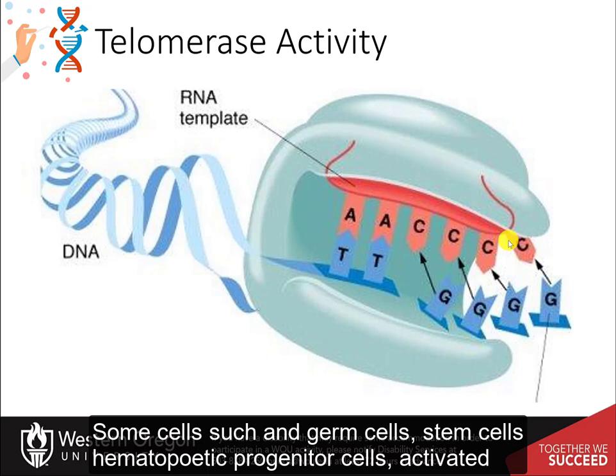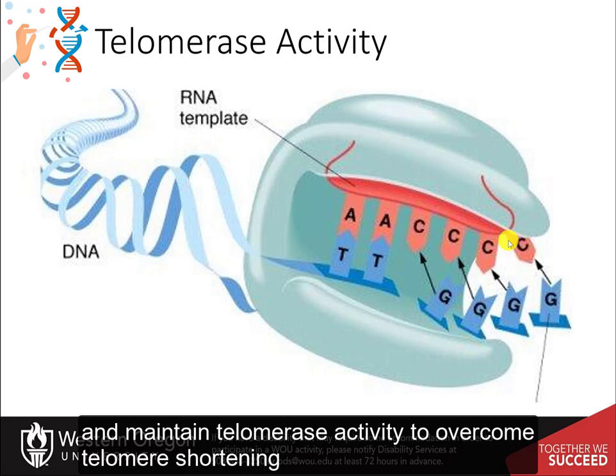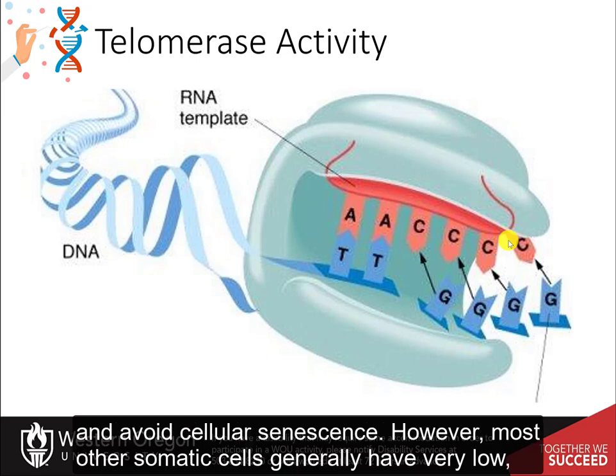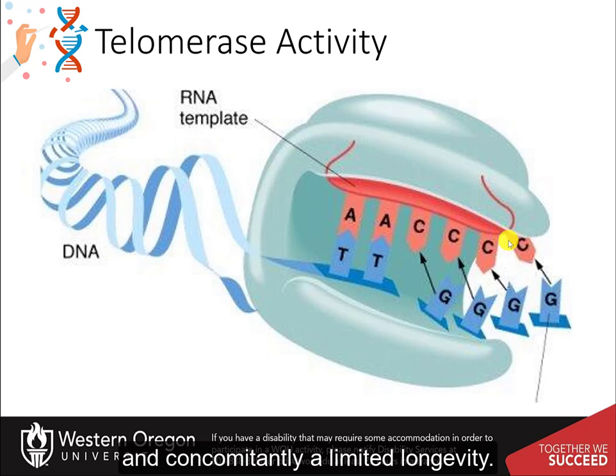Some cells — such as germ cells, stem cells, hematopoietic progenitor cells, activated lymphocytes, and most cancer cells — constitutively express telomerase and maintain telomerase activity to overcome telomere shortening and avoid cellular senescence. However, most other somatic cells generally have very low or undetectable levels of telomerase activity and concomitantly a limited longevity.